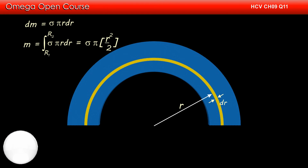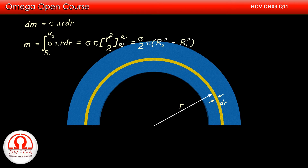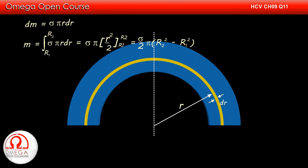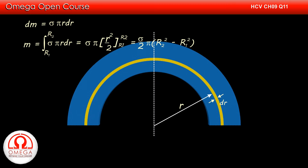Integrating, we get mass equals sigma·pi times r²/2 evaluated from R1 to R2. Putting the limits, we get mass equals (sigma/2)·pi·(R2² − R1²). This plate is symmetric, so the horizontal position of the center of mass must lie in the middle of the disk. So we need to find only the vertical position of the center of mass.